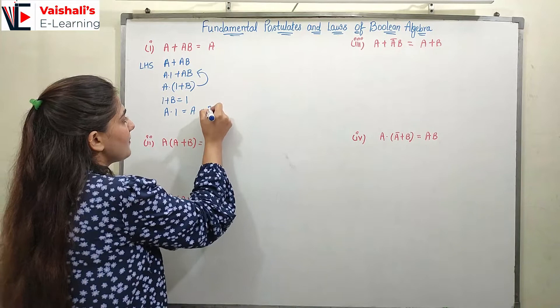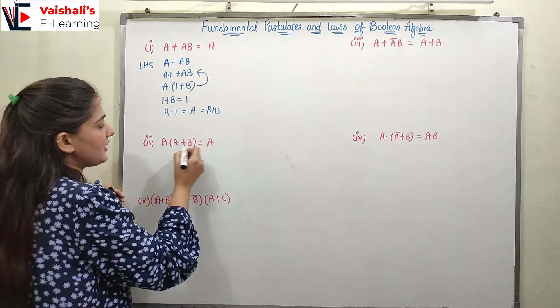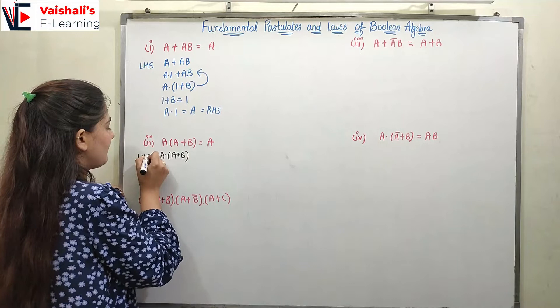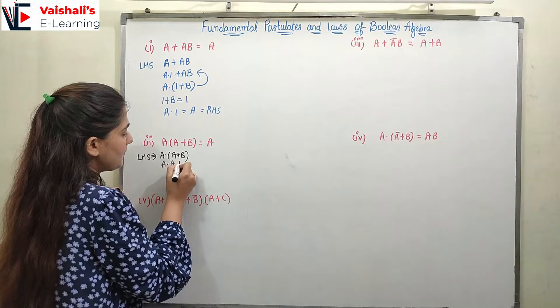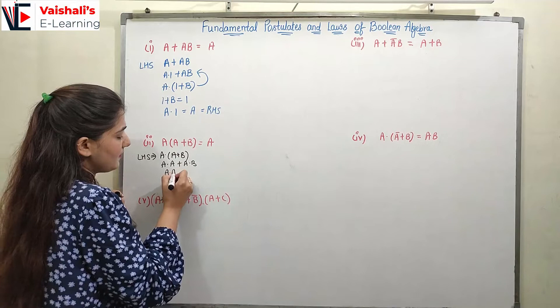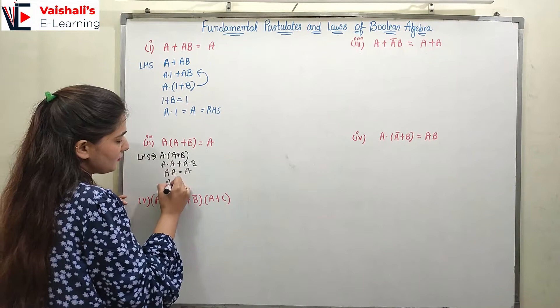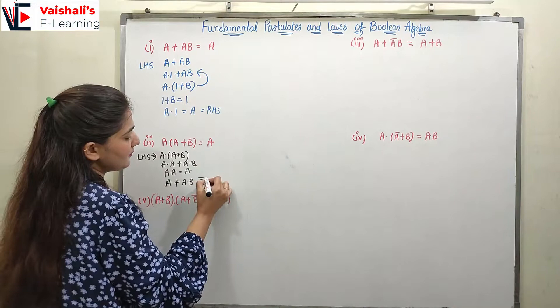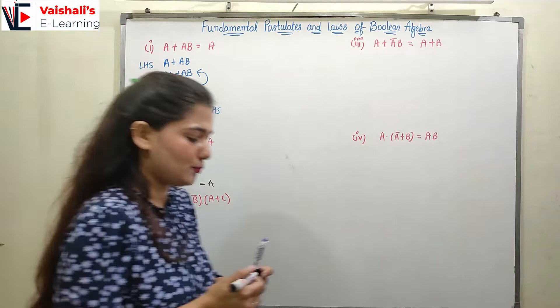Coming to the next expression: a·(a + b). On the left hand side, we expand it: a·(a + b) = a·a + a·b. Now a·a = a, so we get a + a·b. But from our first theorem, a + ab = a. So this simplifies directly to a, and our right hand side is equal.